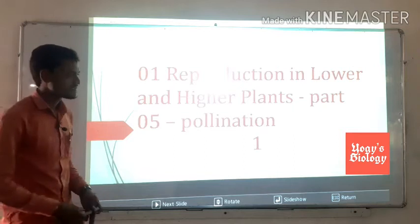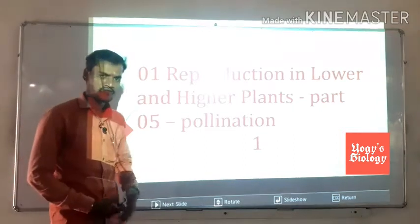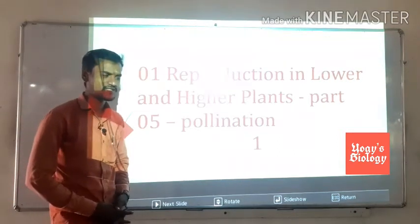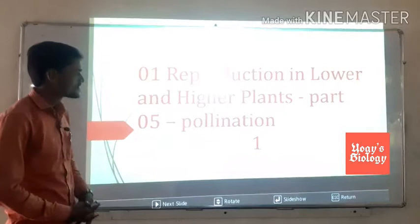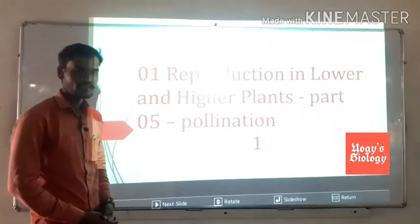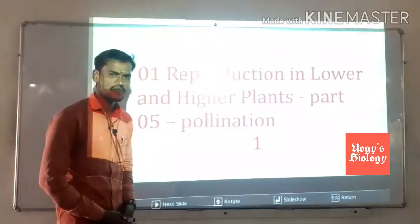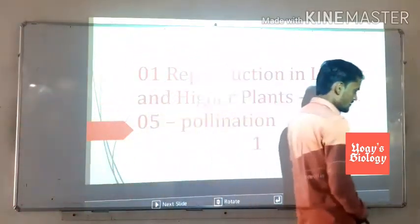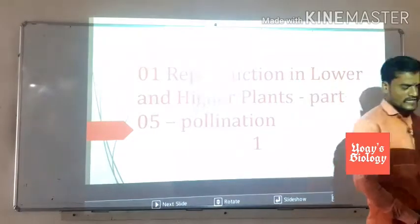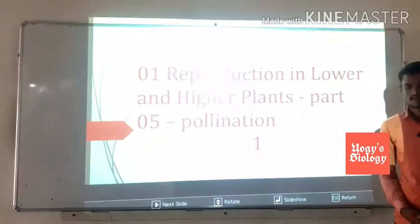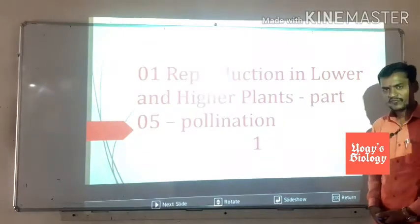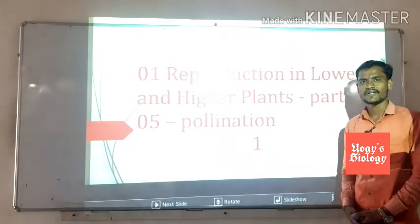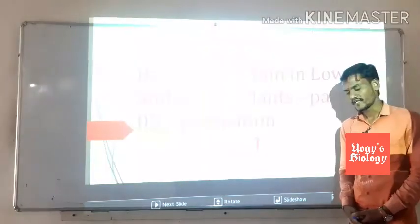In the last lecture we discussed the structure of the anatropous ovule and the pollen-pistil interaction. Today's topic is pollination. Pollination is the process of biological transfer of pollen grains from the anther to the stigma, and this process is called pollination.